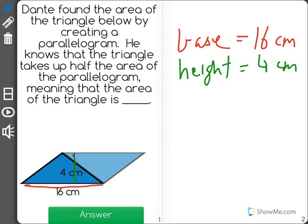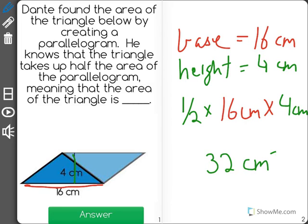Since we know that the area of a triangle is half of that, we can do one-half of the base, which is 16, times the height, which is 4, and the answer is 32 centimeters squared.